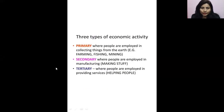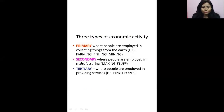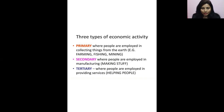Before that, as we all know, there are three types of economic activity. One is primary, where people are employed in collecting things from the earth — for example, farming, fishing, mining, etc. Next is secondary, where people are employed in manufacturing, meaning making stuff. Then third is tertiary, where people are employed in providing services — helping people so that all the manufacturing materials are sent to the people.